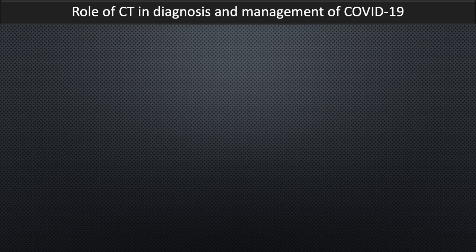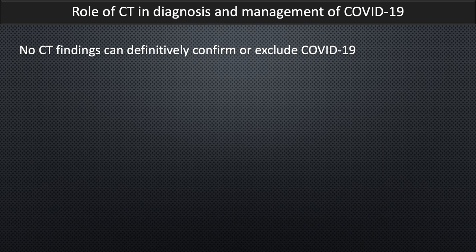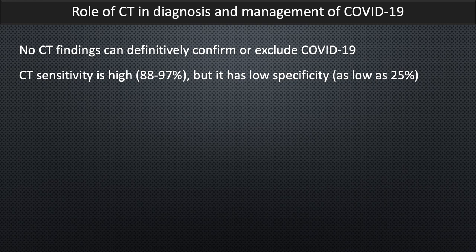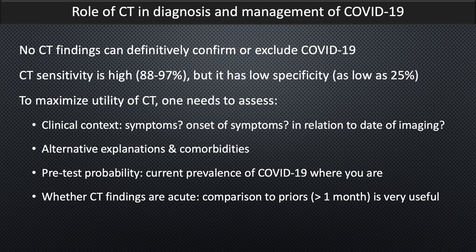What is the role of CT in diagnosis and management of COVID-19? No CT findings can definitively confirm or exclude COVID-19. CT sensitivity is high, 88 to 97 percent based on published literature, but it has low specificity, as low as 25 percent. Therefore, to maximize utility of CT in the evaluation of COVID-19, one needs to assess: first, what's the clinical context — the patient's symptoms, when did symptoms start, and what is the relationship of the imaging date with symptom onset? Are there any alternative explanations or comorbidities? What is the pre-test probability, which depends on the current prevalence of COVID-19 in the location where you're practicing? And lastly, whether the CT findings are acute, which requires comparison to prior imaging if available.